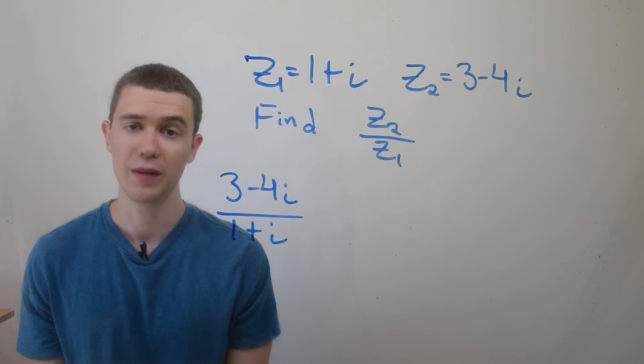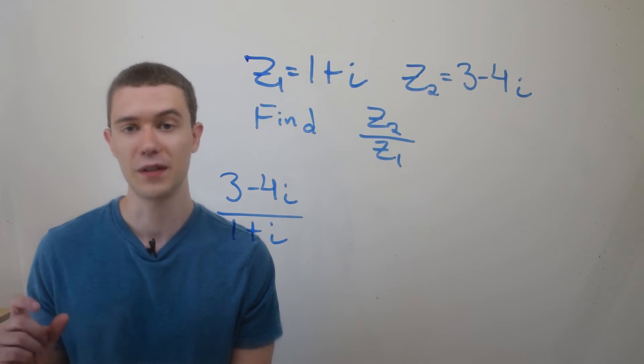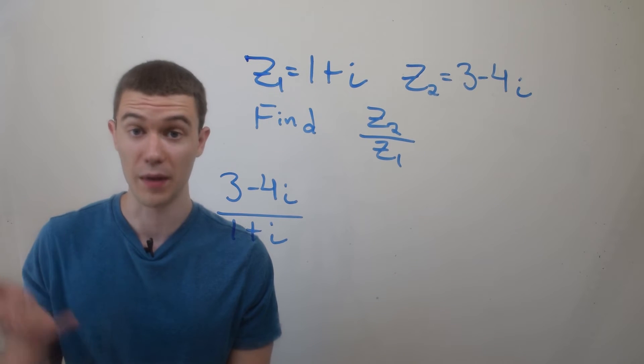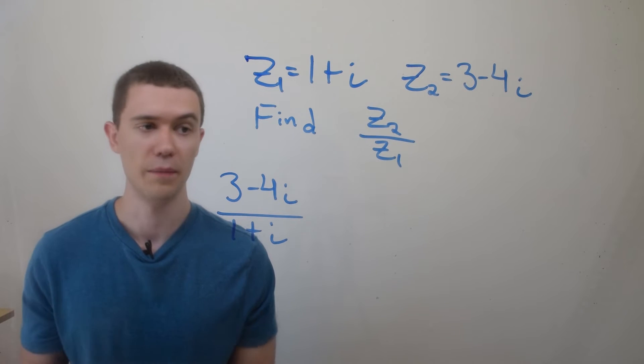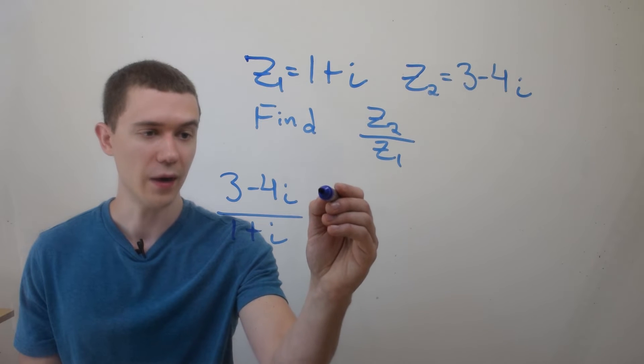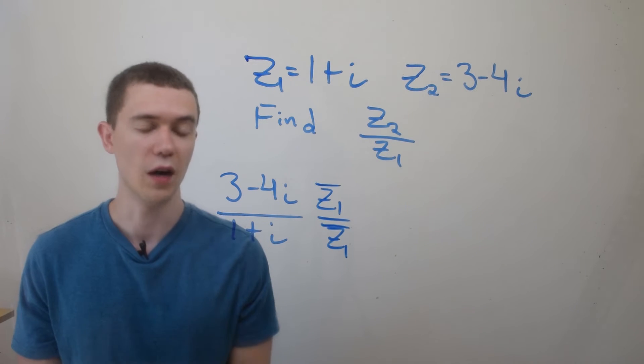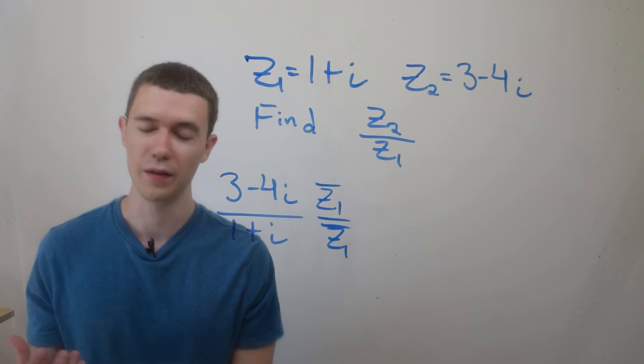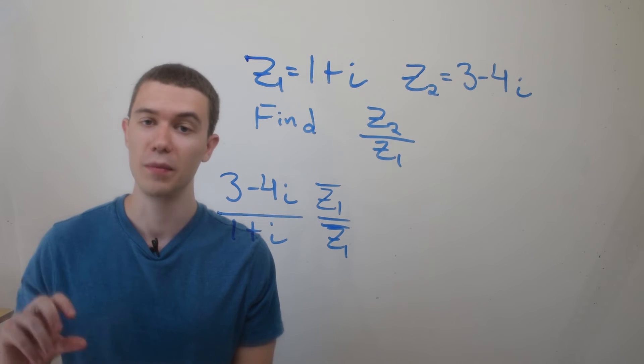And the way we do it is we multiply by the conjugate. This is really similar to something you would have done in a pre-calculus class or maybe a calculus class, multiply by the conjugate. It's probably something you've seen somewhere along the line. So I'm going to multiply by z1 conjugate over z1 conjugate. I'm multiplying by 1, the conjugate of the denominator over itself. That's why I'm allowed to do that, because multiplying by 1 doesn't change the quantity.